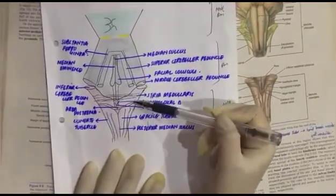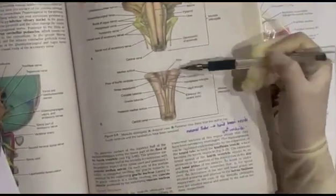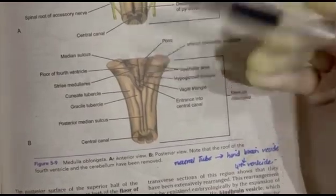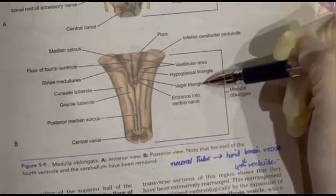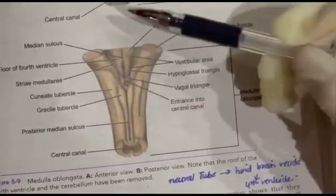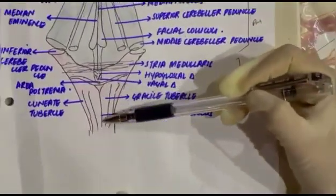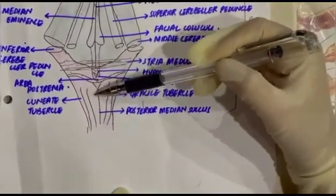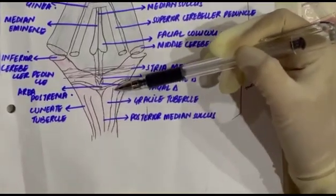Moving inferior to the stria medullares, in this picture you can see the hypoglossal triangle. A little inferior and lateral to it is the vagal triangle, and this is the area postrema. Inferior to this, we have the posterior median sulcus — the tubercle present medially is the gracile tubercle, and the one present laterally is the cuneate tubercle.